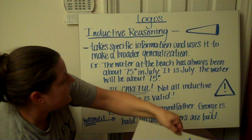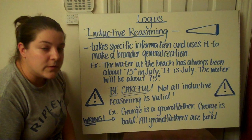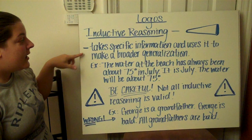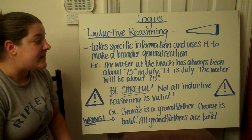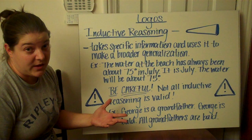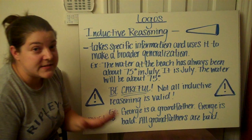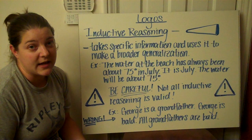Let's do a little bit more with inductive and deductive reasoning. Starting with inductive reasoning — again, small to large. Inductive reasoning takes specific information and uses it to make a broader generalization. An example would be: 'The water at the beach has always been about 75 degrees in July. It's July. The water will be about 75 degrees.' That seems really good and amazing, and you're thinking, yay, inductive reasoning — I can use it forever!